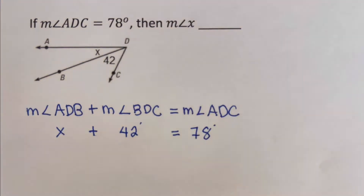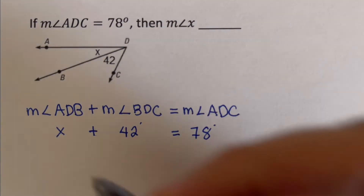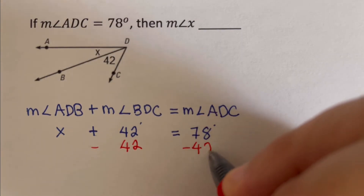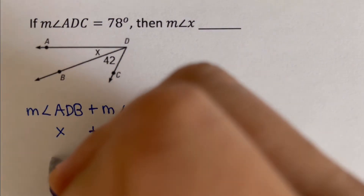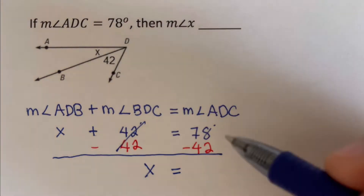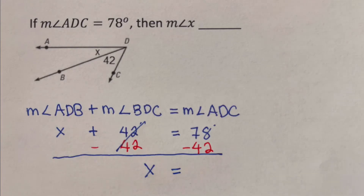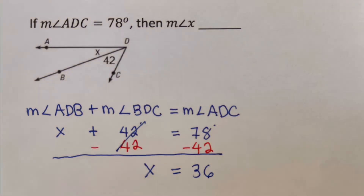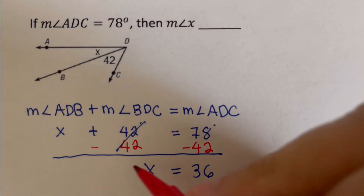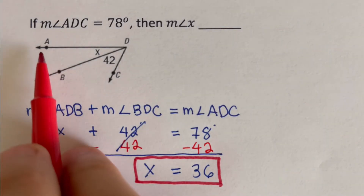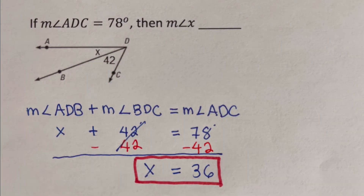We solve for X by subtracting 42 from both sides: X equals 78 minus 42, which is 36. So the measure of angle X — or angle ADB — is 36 degrees. Now let's move on to the next example.